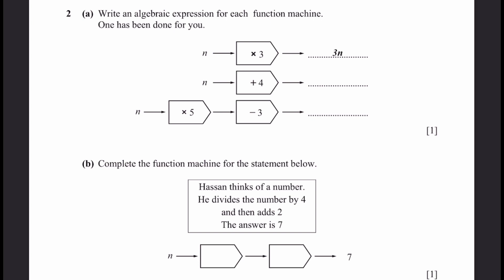Question 2A: write an algebraic expression for each function machine. One has been done for you. n plus 4 is obviously n plus 4. n into 5 is 5n, and then you have to subtract 3, so the answer is 5n minus 3.